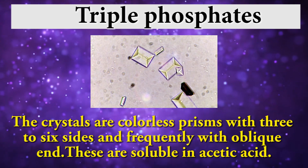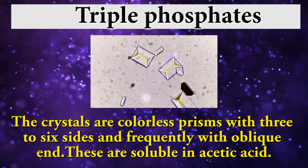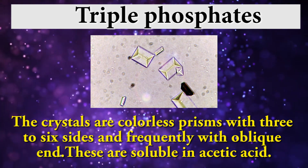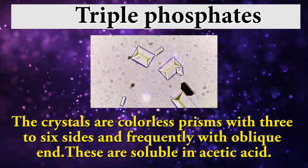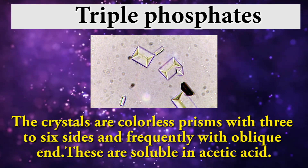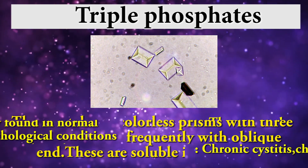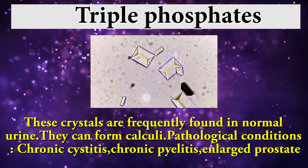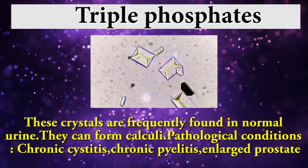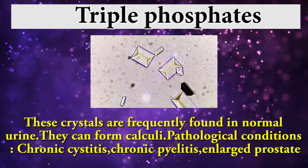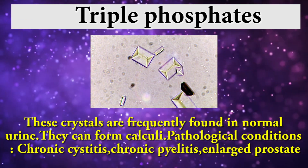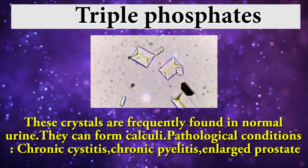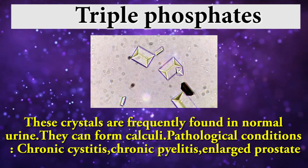Triple phosphates: these crystals are colorless prisms with 3 to 6 sides, frequently with oblique ends. These are soluble in acetic acid and are frequently found in normal urine. They can form calculi. Pathological conditions associated include chronic cystitis, chronic pyelitis, and enlarged prostate.